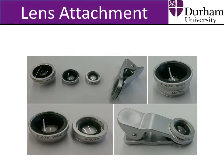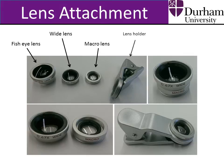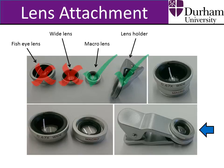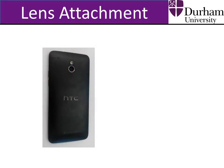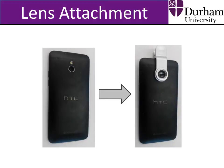Once you have the relevant equipment and have installed the ImageJ and drop analysis software, remove the lens attachment components, which consist of the fisheye lens, the wide lens, the macro lens and the lens holder. The wide lens may be attached to the macro lens — if this is the case, unscrew the macro lens from the wide lens and then screw the macro lens into the lens holder. The other lens attachments are not required for the contact angle measurements. The lens attachment is then simply clipped over the camera lens of the smartphone. It is useful to have the smartphone camera on to ensure the lens attachment is properly aligned over the centre of the smartphone camera lens.